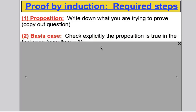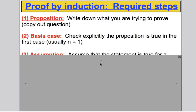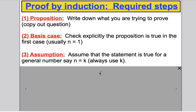Then what you do is what's called the basis case: you explicitly check that the proposition is true for the first number you're checking — usually n = 1. You must check it explicitly, not assume it's true. Then you have the assumption section: you assume that the statement is true for some general number, for example k. Always use k in the exam. You assume the statement is true where n equals k.